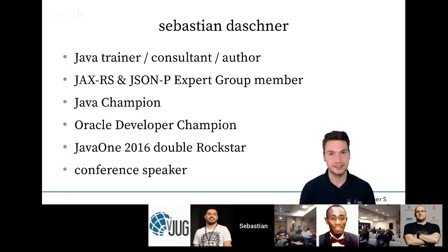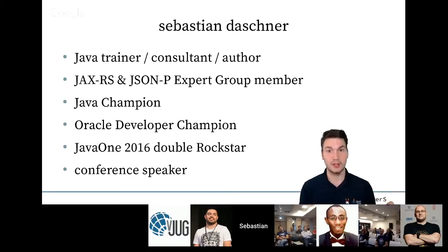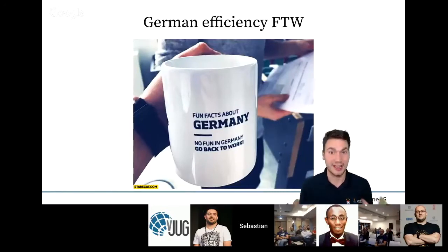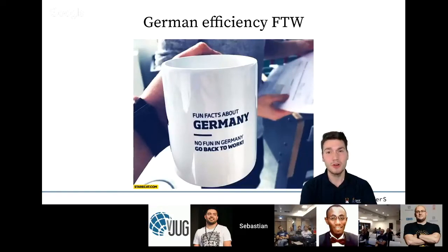My name is Sebastian. I'm self-employed as a Java consultant, trainer, and recently also author. I helped specify the future of Java Enterprise, being involved in two expert groups in Java EE 8. I'm a so-called Java Champion, an Oracle Developer Champion, JavaOne Rockstar speaker, and so on. But actually the most important information is: I'm German. And you know what they say about Germans — we are efficient. Fun fact about Germany: there is no fun in Germany, now get back to work!